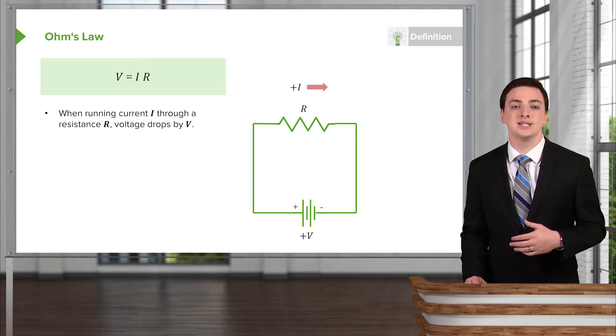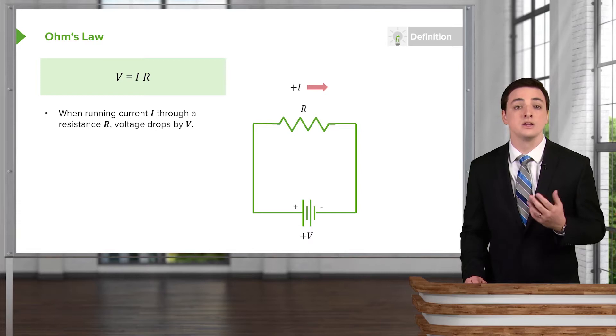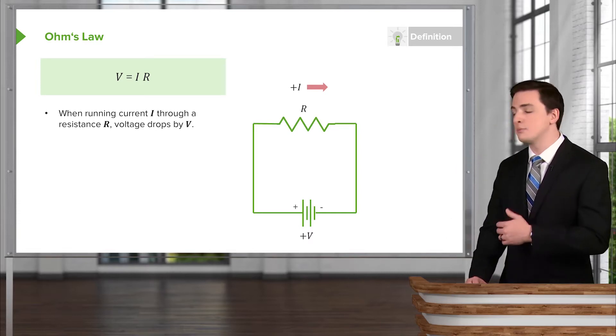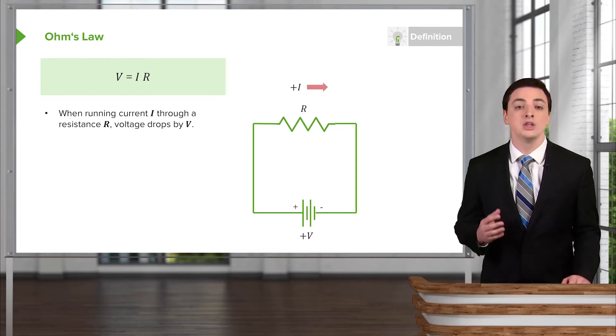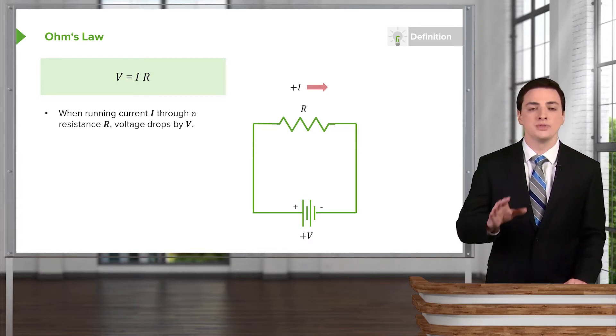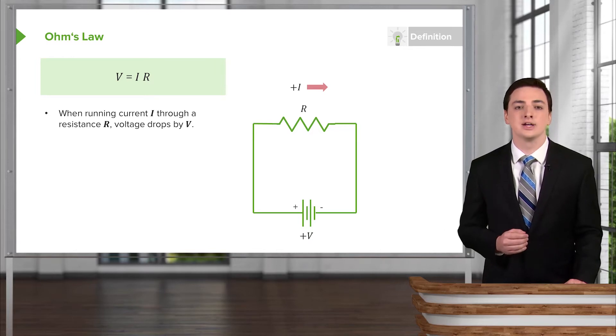This is a resistor with some resistance R. Ohm's law tells us that if we have a particular amount of current flowing through our resistor, the resistor is going to lower the pressure or the amount of push that we have for our electricity by some quantity.